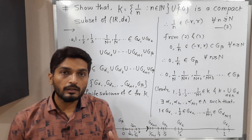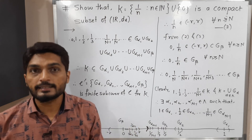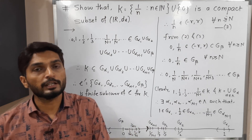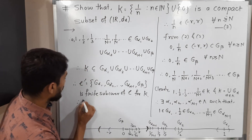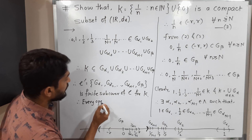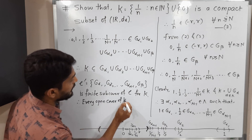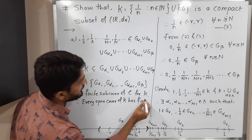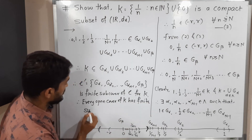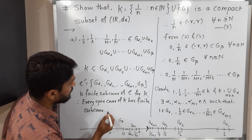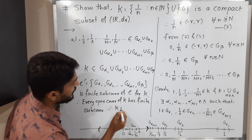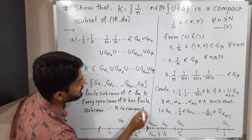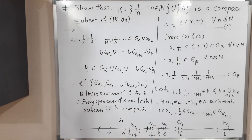So we started with one open cover of K and we found its finite subcover. Therefore, every open cover of K has a finite subcover. Hence K is compact. So in this way we proved that K is a compact subset of ℝ. Thank you, see you.